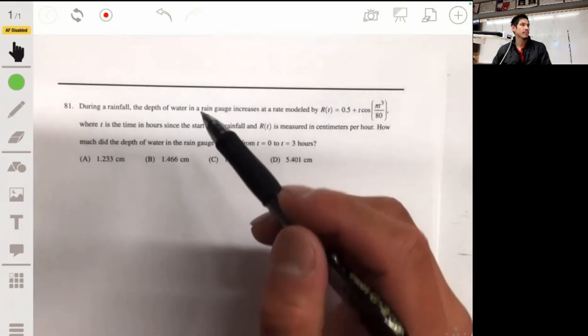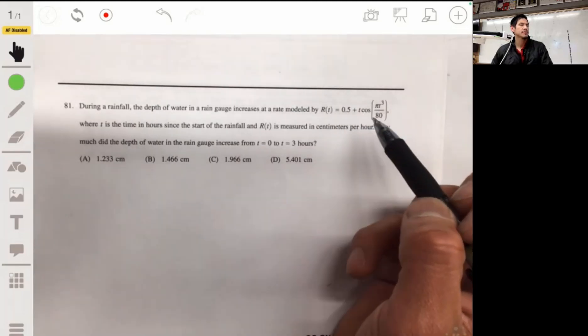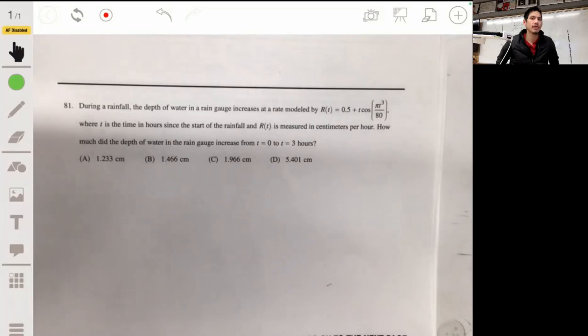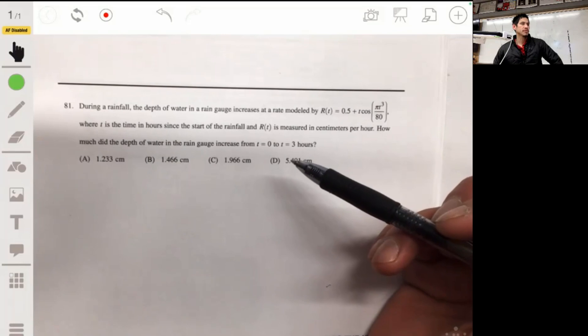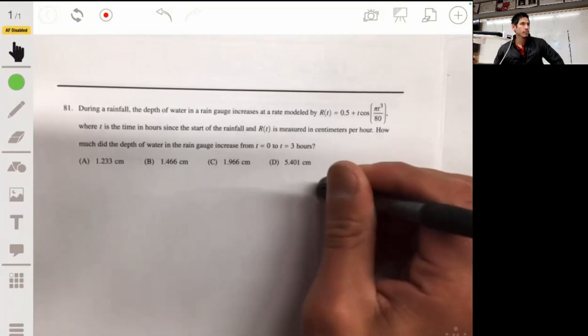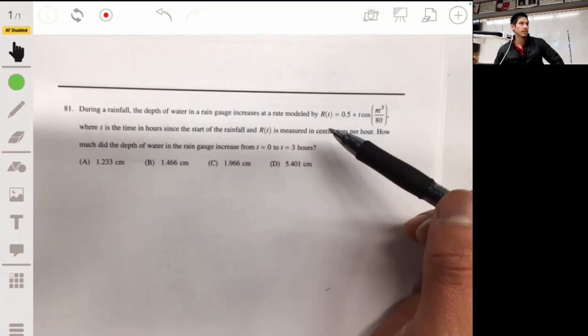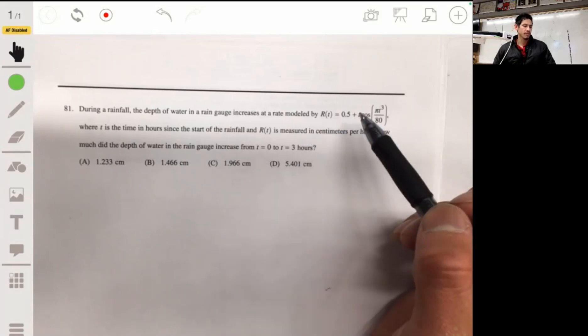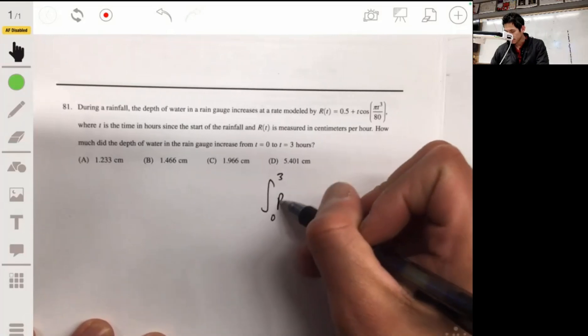Problem 81. During a rainfall, the depth of water in the rain gauge increases at a rate modeled by r(t) = 0.5 + t cos(πt³/80), where t is the time in hours since the start of the rainfall and r(t) is measured in centimeters per hour. How much does the depth of water in the rain gauge increase from zero to three hours? We're given the rate of the depth of water, so all we have to do is integrate this from zero to three. That'll give us the total over that time period. We just integrate r(t) from zero to three.